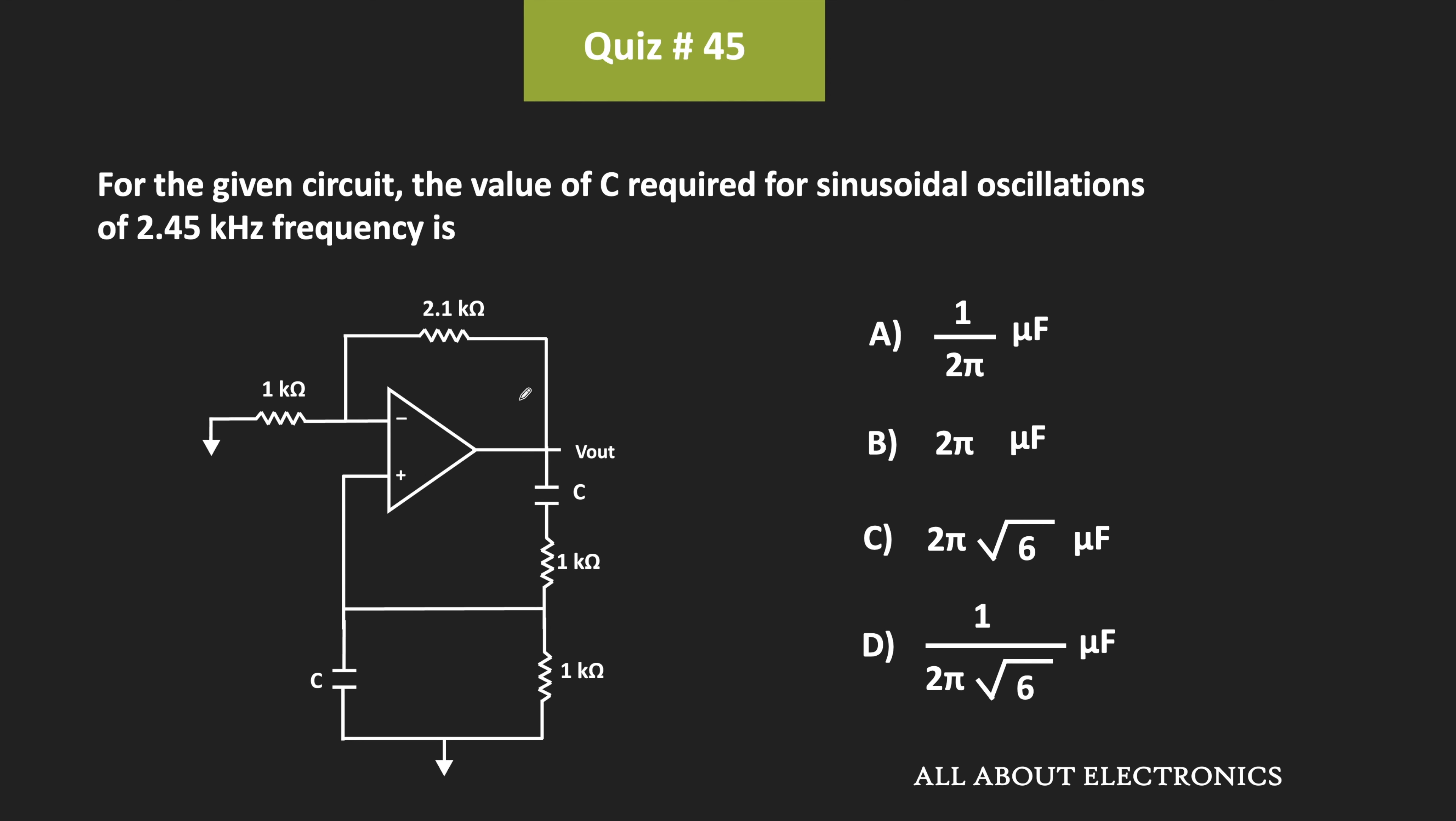Hey friends, welcome to the YouTube channel All About Electronics. In this question, for the given circuit, to get a sinusoidal oscillation of 2.45 kHz, we have been asked to find the required value of C.